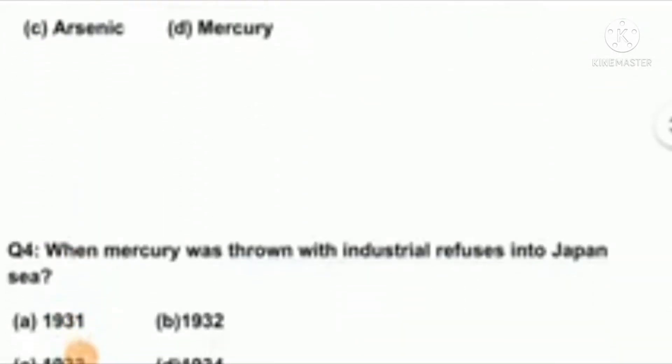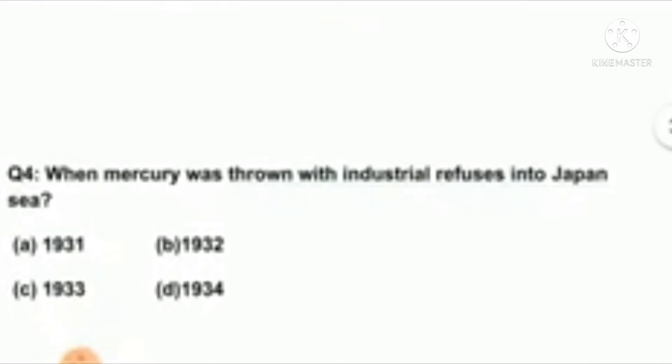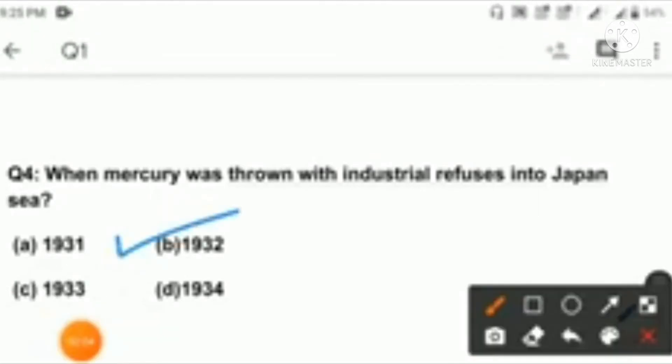Question number four: when was mercury thrown with industrial refuse into Japan sea? Option A: 1931, B: 1932, C: 1933, D: 1934. Right answer is option B: 1932.